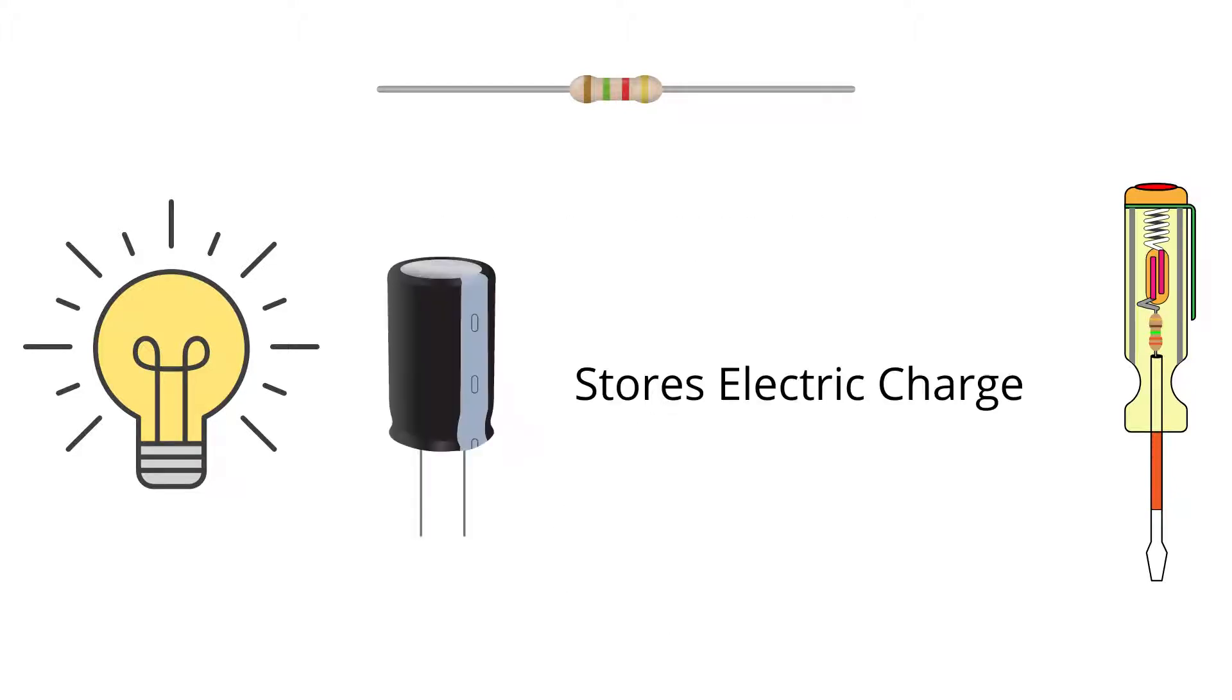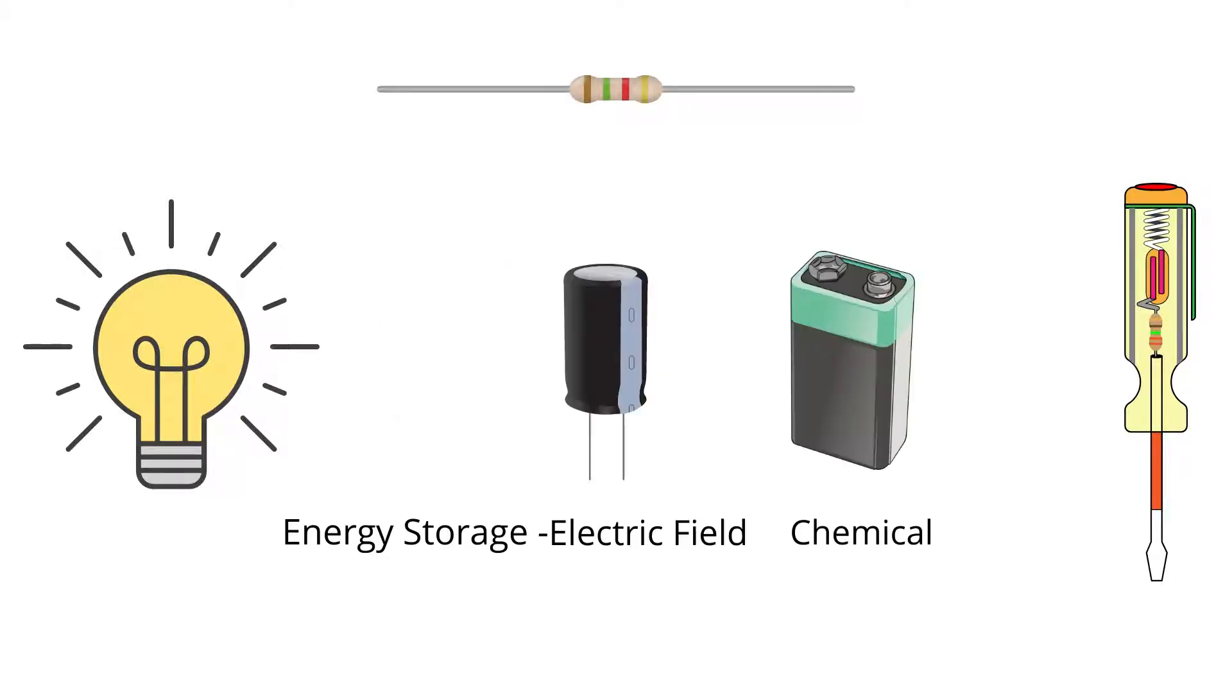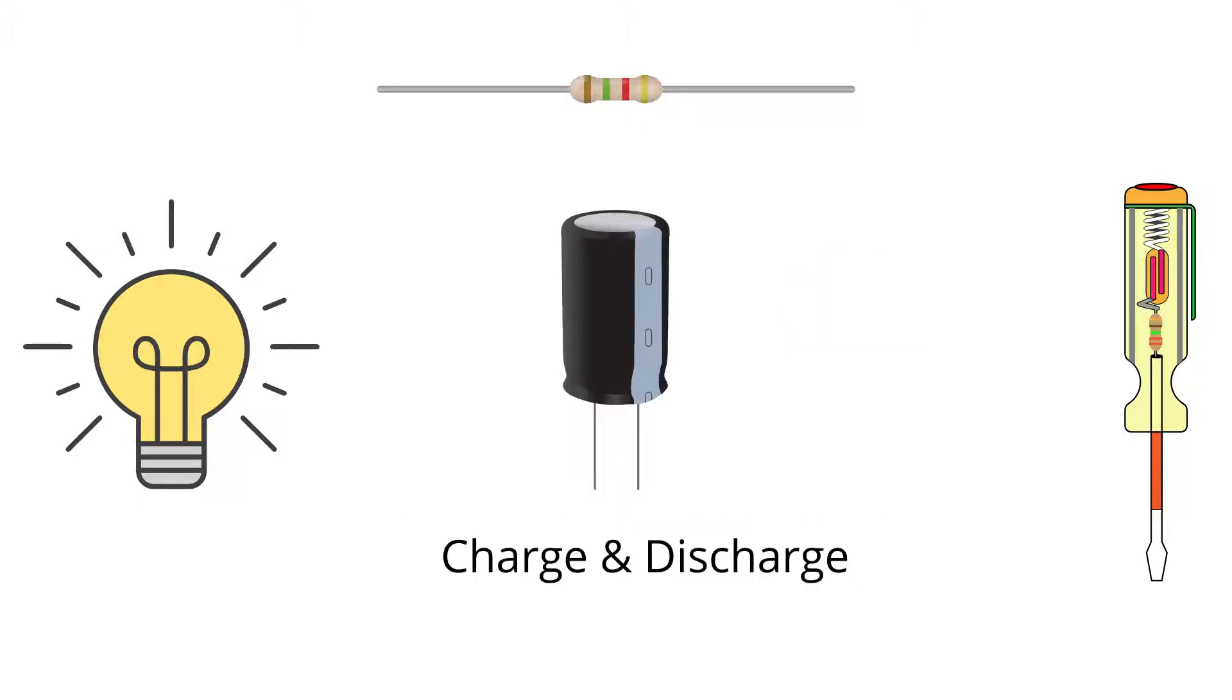A capacitor stores electric charge. It's a little similar to a battery, except it stores energy in a different way. A capacitor can't store as much energy as a battery, although it can charge and release the energy much faster.